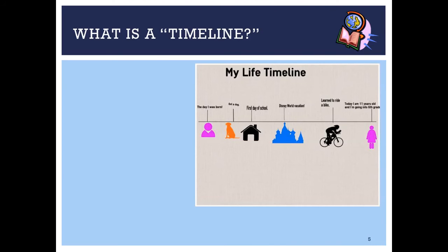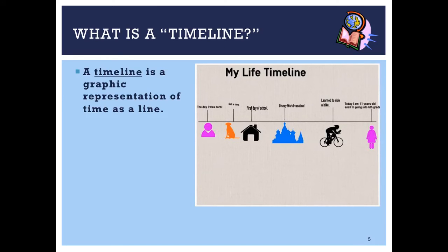We use some different tools in social studies. The first thing to write on the left side of the line in Cornell notes is: what is a timeline? A timeline is a graphic representation of time on a line. If you've done a number line in math class, a timeline is very much like that but has to do with time. It tells you what order things occur in and how much time has elapsed between certain events. This particular timeline shows from the time somebody was born to the time they're 11 years old going into sixth grade.